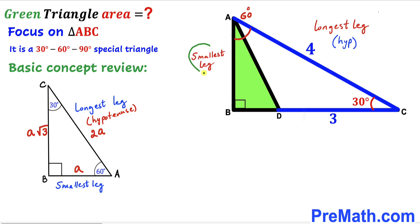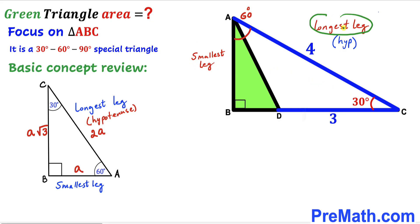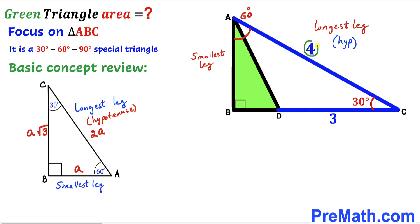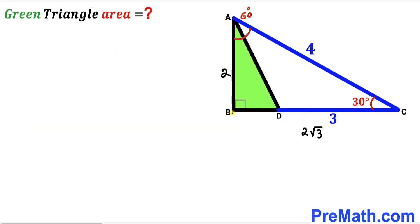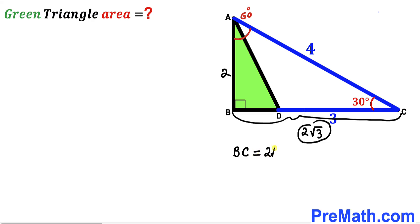Applying this to our problem: the side opposite the smallest angle is our smallest leg, and the hypotenuse is the longest leg opposite the 90-degree angle. Our longest leg AC is 4 units and it is twice the smallest leg, so the smallest leg AB is 2 units. The third leg BC is therefore 2√3 units.